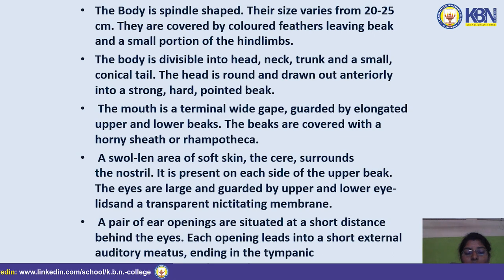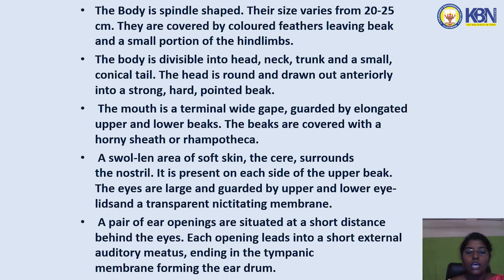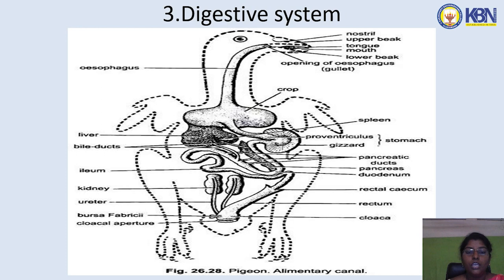The beaks are covered with a horny sheath or rhamphotheca. The swollen area of soft skin called the cere surrounds the nostril and is present on each side of the upper beak. The eyes are large and guarded by upper and lower lids and a transparent nictitating membrane. A pair of ear openings are situated at a short distance behind the eyes, each leading into a short external auditory meatus ending in the tympanic membrane.